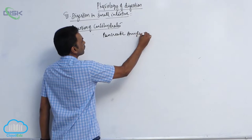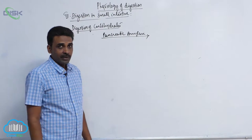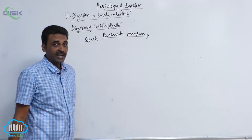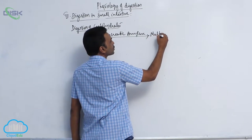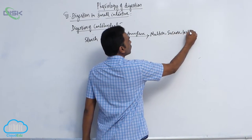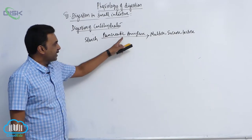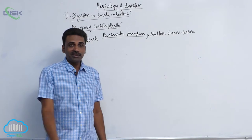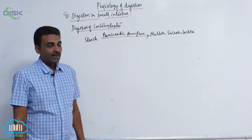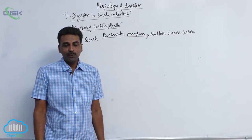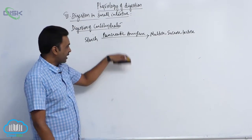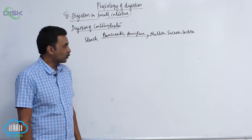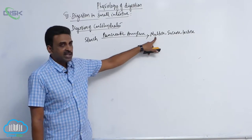Pancreatic amylase is the major amylase in humans. It acts on starch and converts it into disaccharides including maltose, sucrose, and lactose. Pancreatic amylase works in alkaline medium (above pH 7), while salivary amylase works at pH 6.8 — acidic medium — but functionally both are the same. The remaining starch not converted in the mouth is acted upon by pancreatic amylase to produce disaccharides: maltose, sucrose, and lactose.